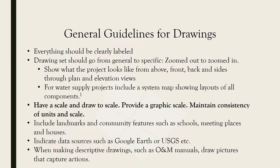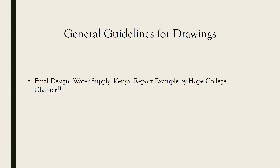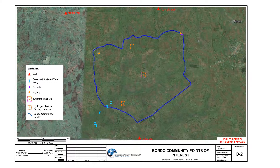Another guideline is having a scale and ensuring that you draw to scale. If printing it out, you should provide a graphic scale. It's very important to maintain consistency of units and your scale. As an example, this is the final design of the water supply project in Kenya done by Hope College chapter. If you look at the drawing at the very bottom left corner, you'll notice there is a black and white scale — this is what's referred to as a graphic scale in your drawing sheet.